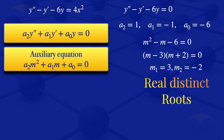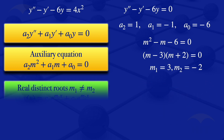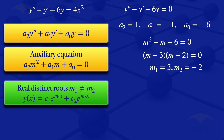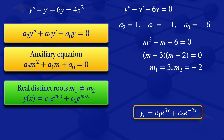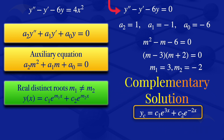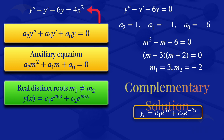When we have real distinct roots, the solution is c1 times e to the power m1·x plus c2 times e to the power m2·x. Substituting m1 equals 3 and m2 equals minus 2, our complementary solution is c1·e^(3x) plus c2·e^(minus 2x). This is the complementary solution to the non-homogeneous ODE.